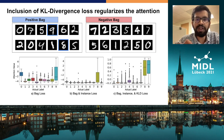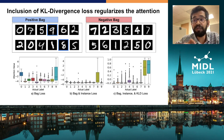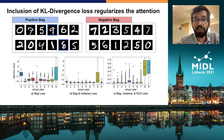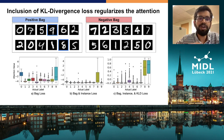Without KL divergence loss, attention weights for positive instance classes 8 and 9 were highly variable across different bags. By including KL divergence loss, attention weights became more uniform for both positive instance classes — achieving our objective of giving equal importance to instances from the same cluster.